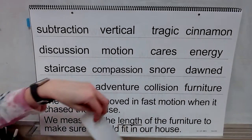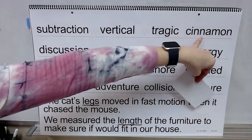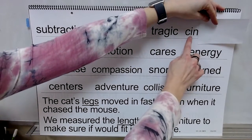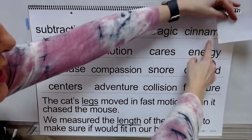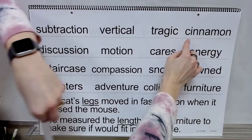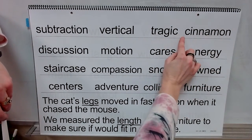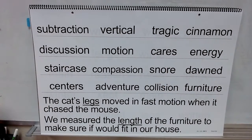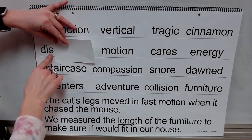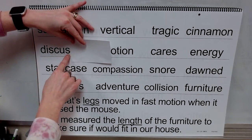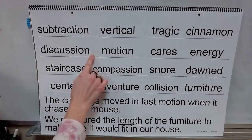Now you'll practice reading some words using your knowledge of syllables. We're going to be flexible when we read this word — let's pretend you don't know what it is. We're going to break it apart into its syllables. Syllable: 'sin'. Syllable: 'nay'. Syllable: 'mon'. Let's blend that — cinnamon. Adjust for the schwa. What word? Cinnamon. Syllable: 'dis'. Syllable: 'cuss'. Syllable: 'shun'. Blend it. Word: discussion.